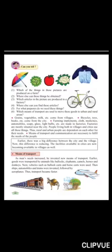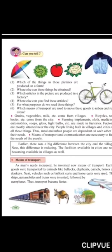The facilities available in cities are now becoming available in villages as well. As men's needs increased, he invented new means of transport. Earlier, goods were transported by animals like bullocks, elephants, camels, horses, and donkeys.